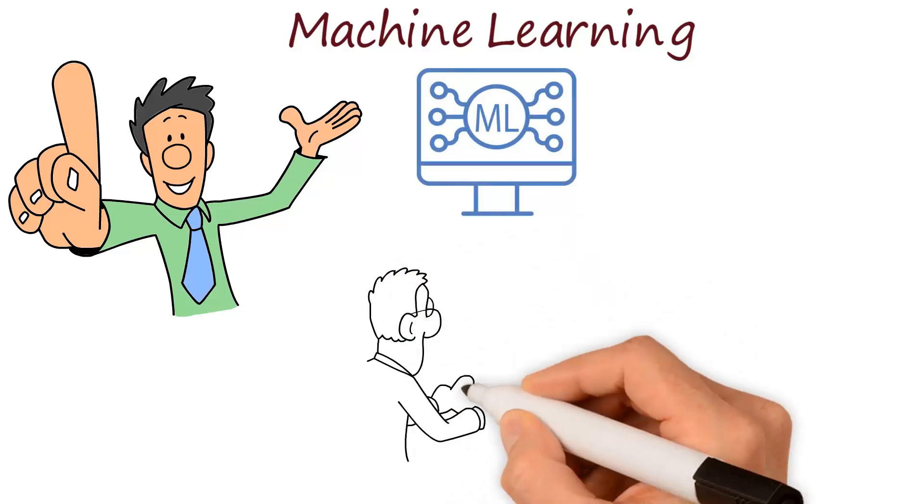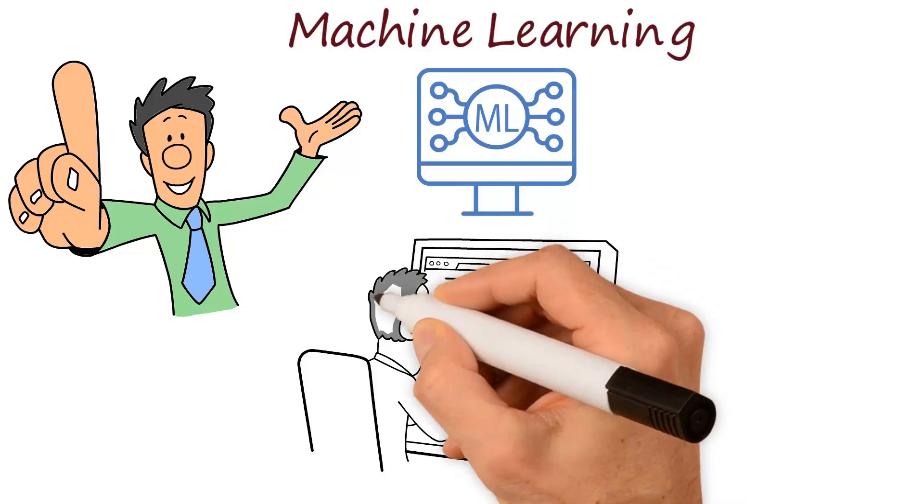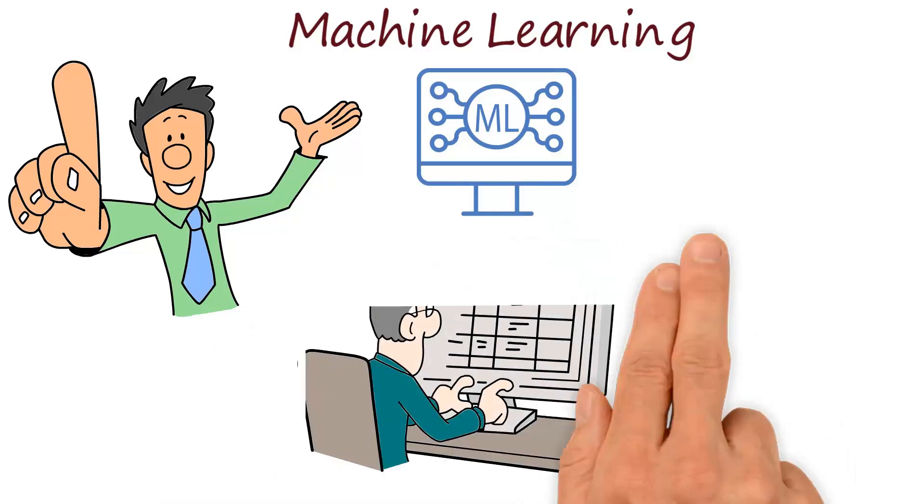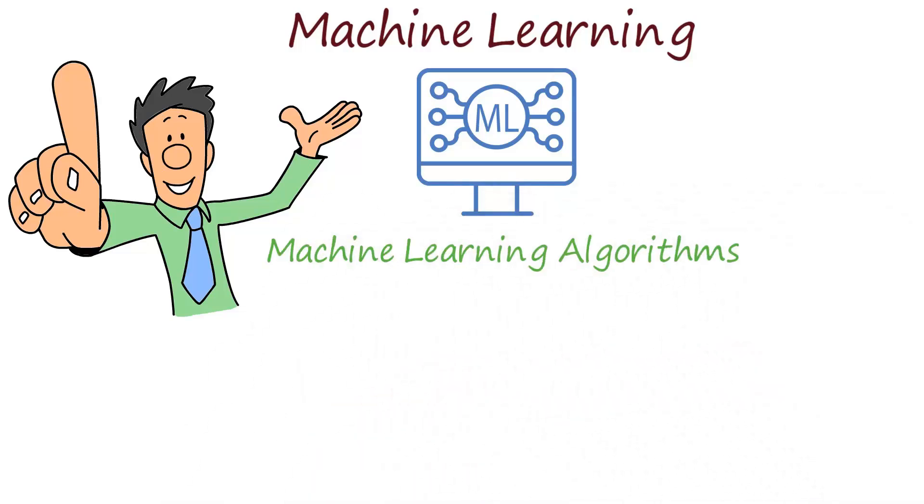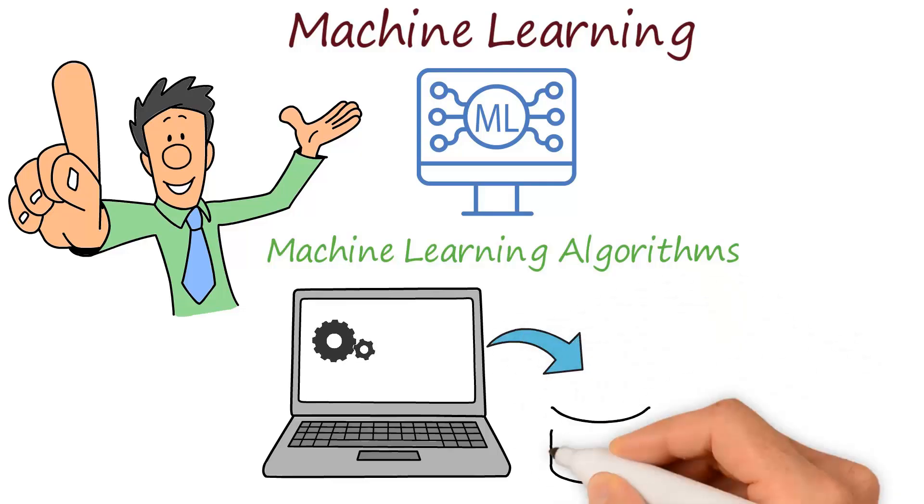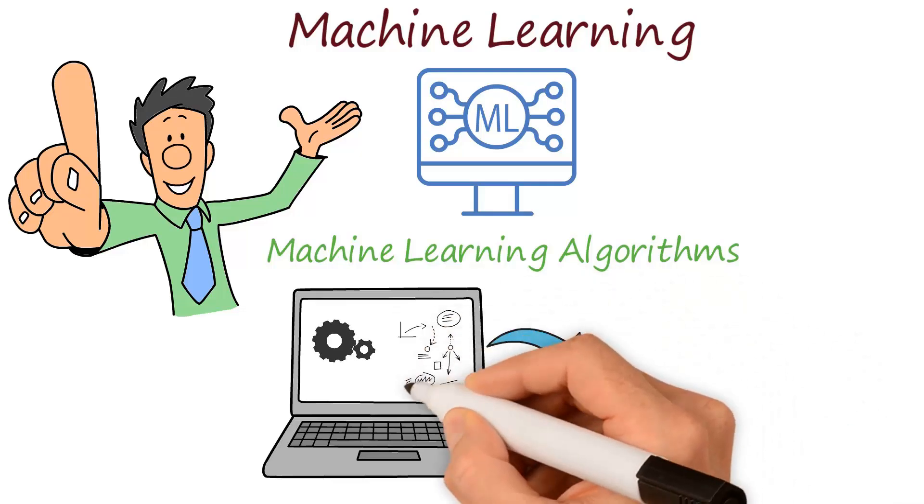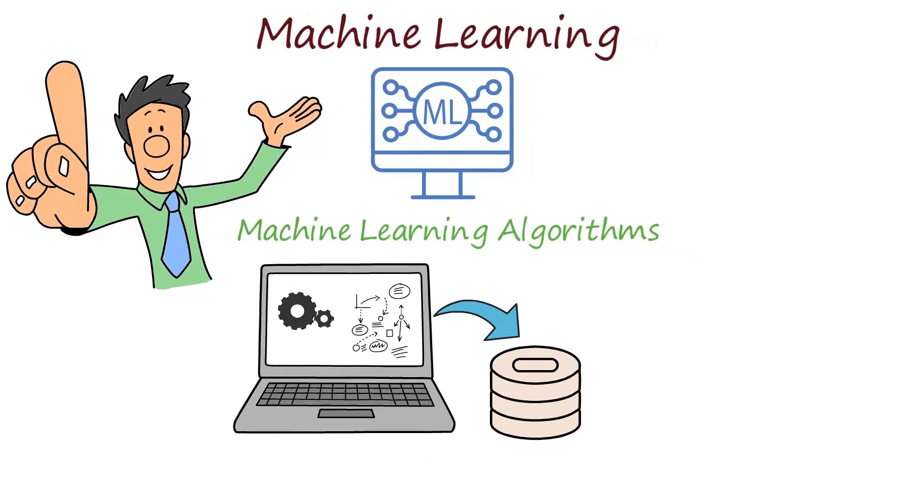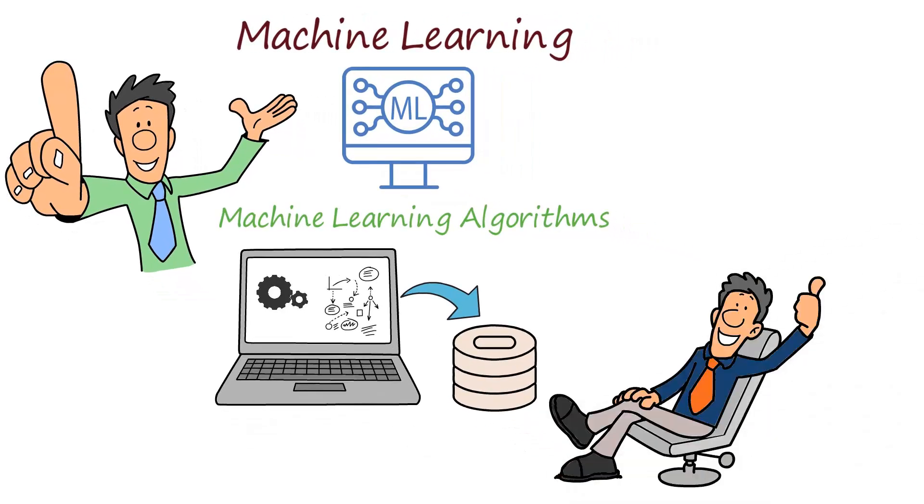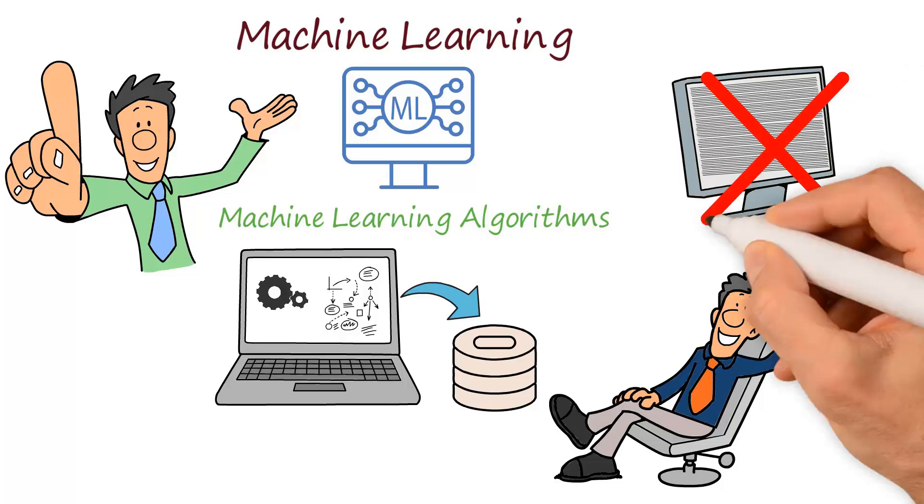Unlike traditional computer programs that rely on pre-written code to make decisions, machine learning algorithms can continuously learn from new data and adjust their predictions or decisions accordingly. This allows for a level of adaptability and flexibility that's not possible with traditional programming methods.